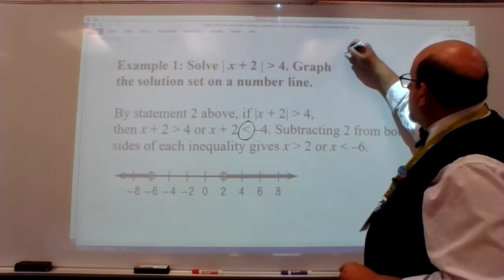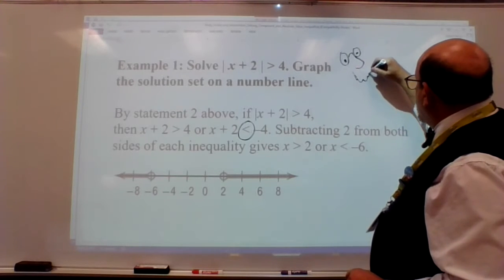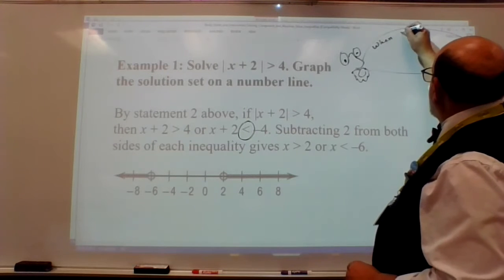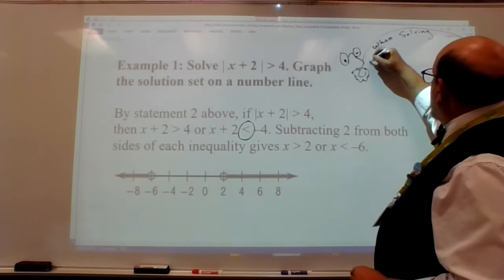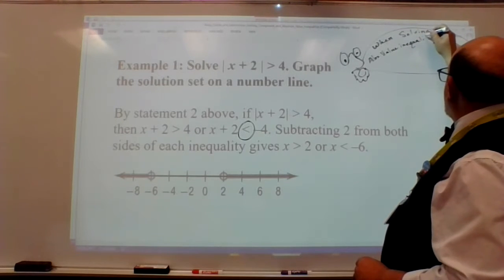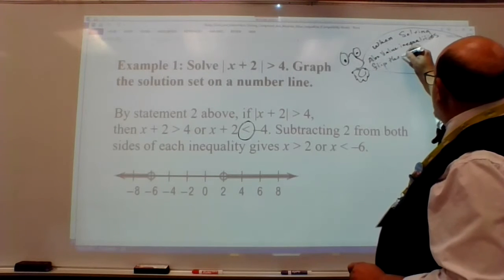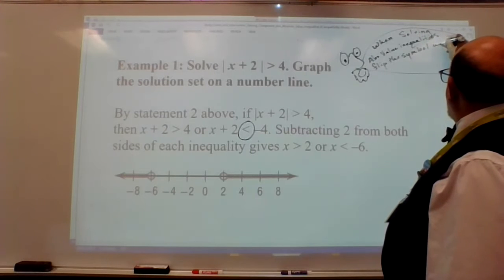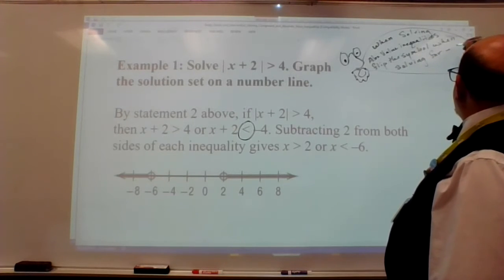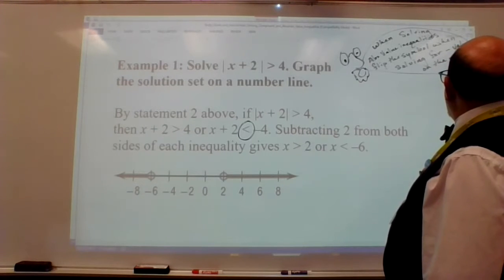And so I'll put my little crazy circle face up here with the glasses and the super big nose and the goatee and I'll just write it up here. When solving absolute value inequalities, flip the symbol when solving for the opposite or negative value on the right. And I'm going to show you an example of that.